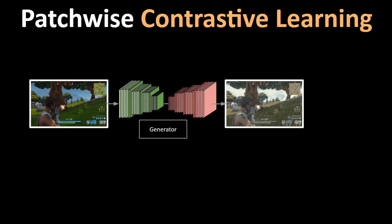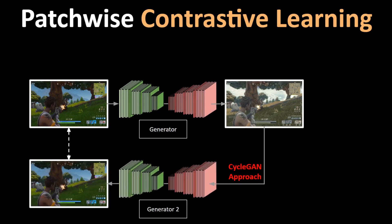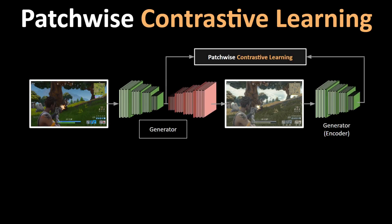The generator network learns to convert a Fortnite image into PUBG. Remember that in CycleGAN, we would create another network that tries to convert PUBG into Fortnite to calculate the reconstruction error. This creates a massive overhead in terms of GPU power and memory requirements. Here, we instead use contrastive loss.